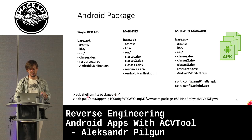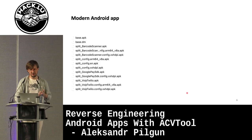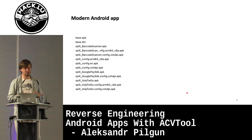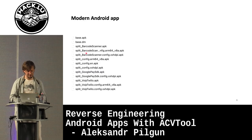If I want to download the application from the device to the computer, I use this set of commands. I list the packages, which shows the path to the application, and then I can pull the application with this command and get this set of files — the base APK and the split APKs. If I look into a modern application, you will have again the base APK and many split APKs. Here you will see separate libraries for a barcode scanner, some config files, Google Play SDK, VoIP, and so on.